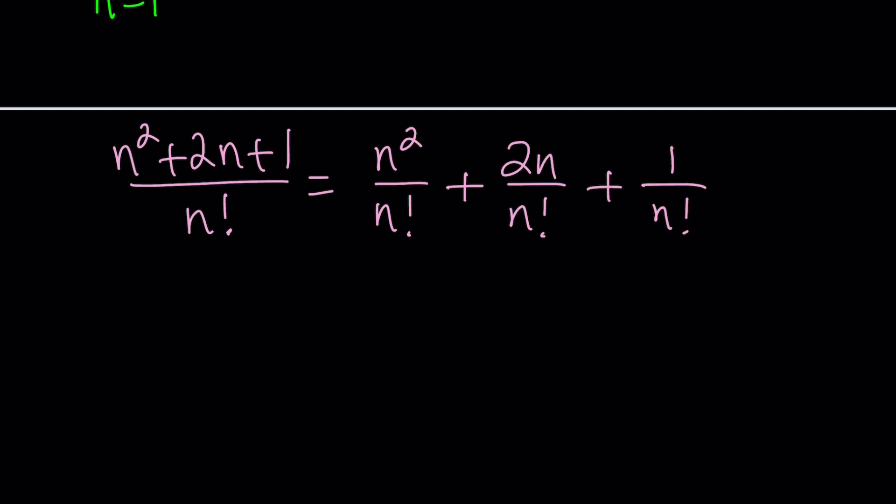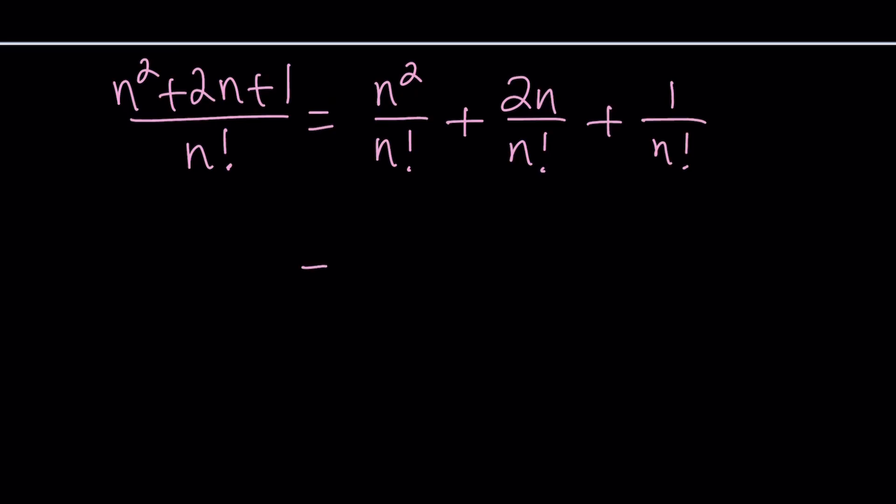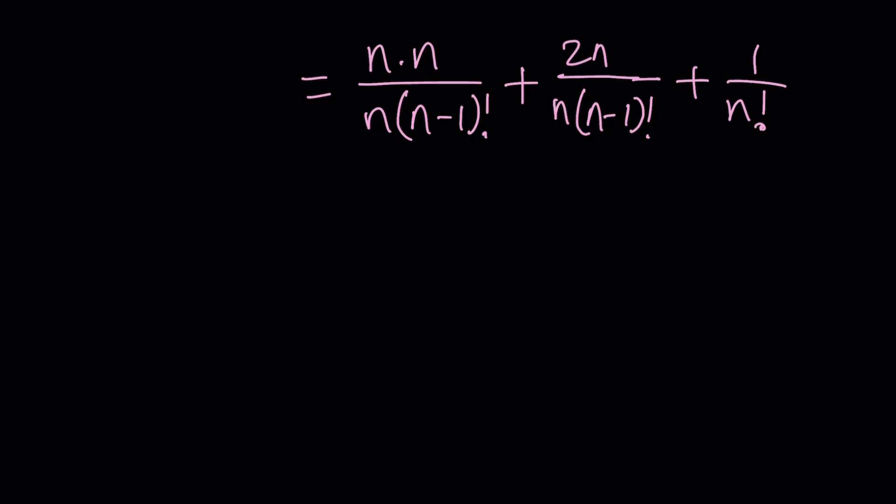The third one is the easiest but don't worry, we're going to simplify all of this. Next, n squared we're going to write as n times n. n factorial can be written as n times (n-1) factorial using properties of factorials. 2n divided by n times (n-1) factorial again, and plus 1 over n factorial. Notice that you can cross cancel n.